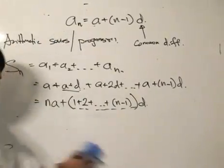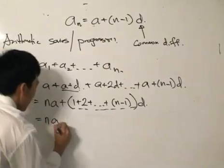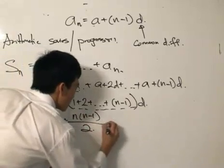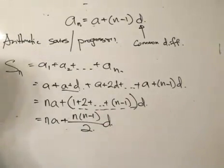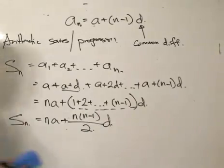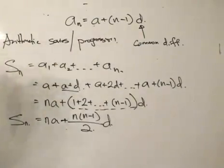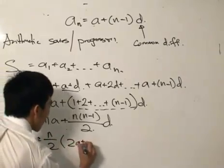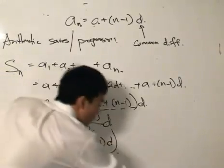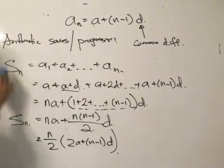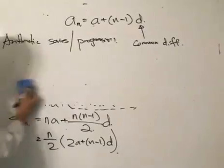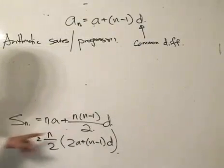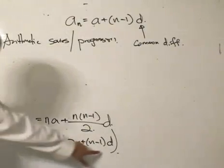So we write the series as S(n) = n times the first term a, plus n(n−1)/2 multiplied by the common difference d. Rearranging, we get S(n) = n/2 · (2a + (n−1)d). These are two forms of the sum of an arithmetic series. Pick a term, put in the value of n, and you immediately get the sum.